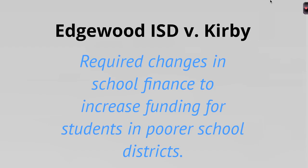Edgewood ISD v. Kirby is also in Texas, and this is one that still affects a lot of students today. It's a case about school financing — funding was based on property taxes, so property-poor districts got very little funding while wealthy districts had plenty. This led to the Robin Hood concept, where richer school districts send money to poorer school districts so they have adequate funding.